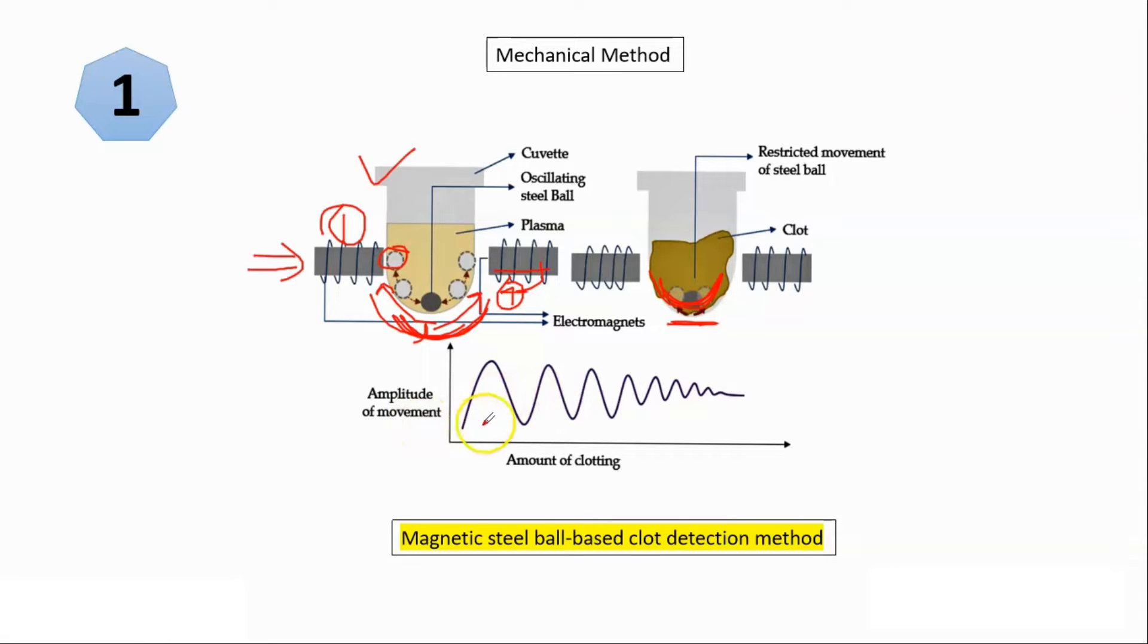So when ball is normally moving, normally oscillating on activation and deactivation of magnets, then clot is like this normal. When range of motion is minimized due to clot formation this will go like this. Here at this point of time chronometer gets stopped as clot is formed. This is how it detects the time for clot formation.